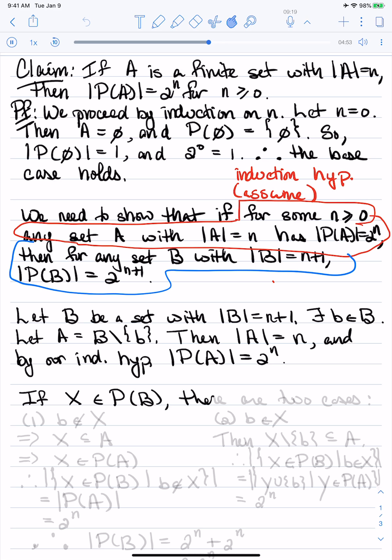Now let's consider the power set of B. If x is an element of the power set of B, there are two cases that don't overlap. In the first case, the element b is not in x, and in the second case, b is in x.